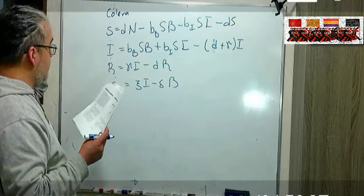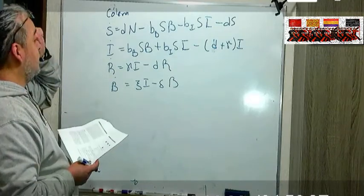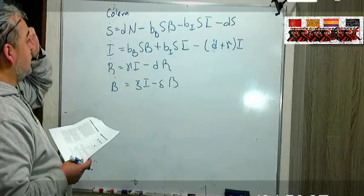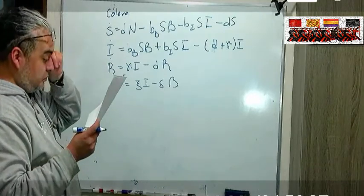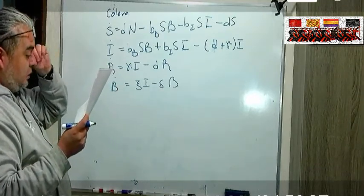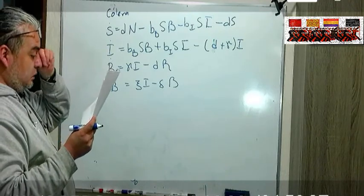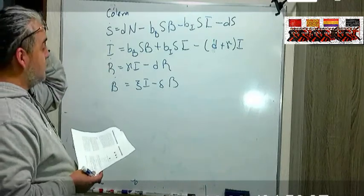Las B son las bacterias del cólera que producen el cólera, y la delta entonces es una tasa de remoción bacteriana en el agua.